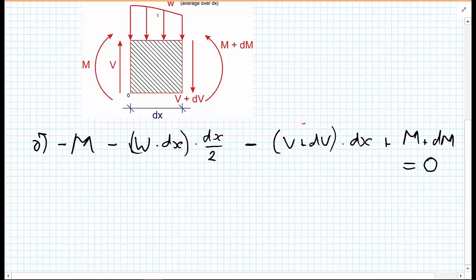We're going to do some rearranging. We can see straight away that we have a minus M and an M, so that can be removed. If we look at this term here, we have a small number dx multiplied by dx again, so we'll have a dx squared. A small number times a very small number is very small, so we need to remove this.